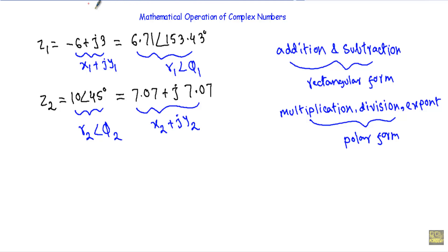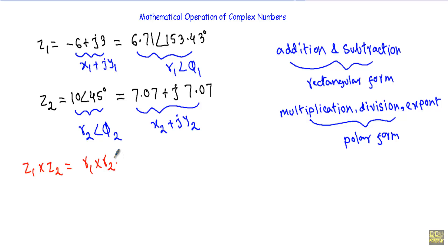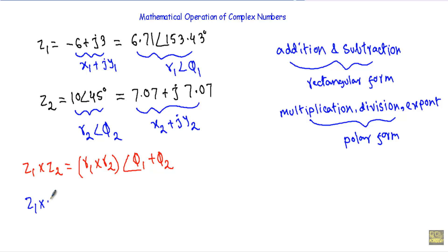Now let me show you the multiplication of Z1 into Z2. When multiplying, we use polar form. We multiply the amplitudes — r1 into r2 — and we add the phase angles to get the result: r1·r2 at angle (phi1 plus phi2).